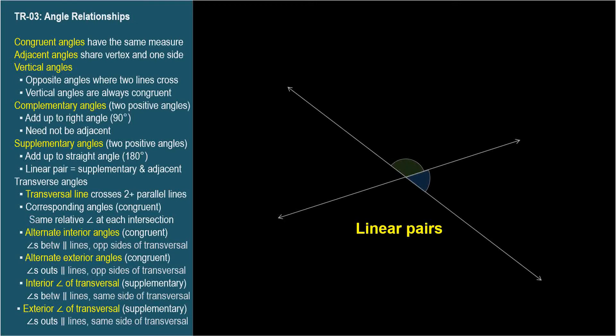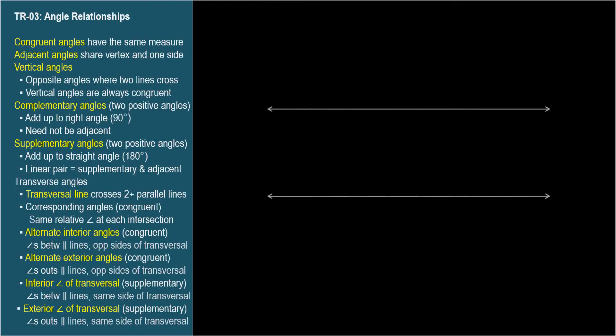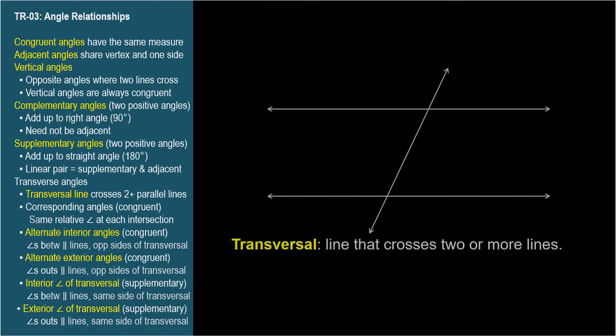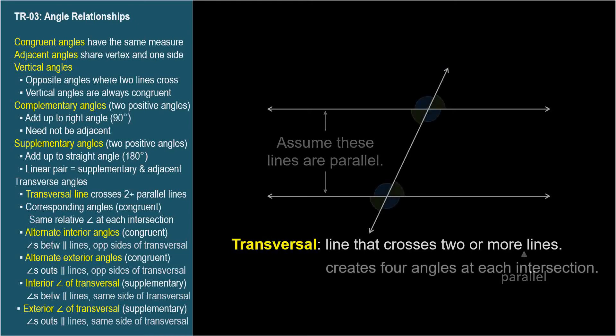A line that crosses two other lines is called a transversal. In our case, we'll assume the two lines are parallel. The transversal line creates four angles at each intersection, as shown here. The angles are called transverse angles, and we'll cover their relationships next.